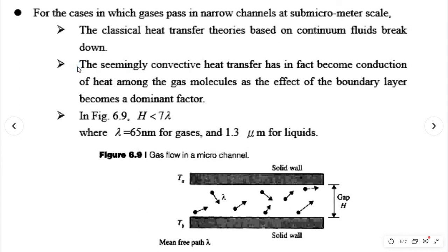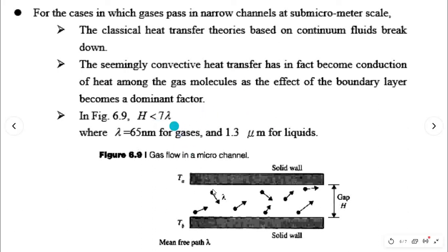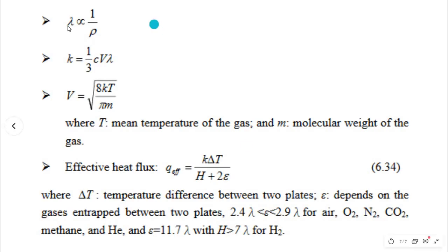For cases in which gases pass through narrow channels at sub-micrometer scale, the classical heat transfer theory based on the continuum fluid model breaks down. The seemingly convective heat transfer has in fact become conduction of heat among the gas molecules, as the effect of the boundary layer becomes a dominant factor. In this figure, h is the gap between the two plates. The gap h is less than 7λ, where λ equals 65 nanometers for gases.